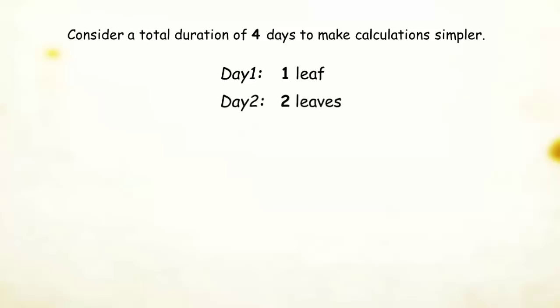Instead of 30 days, just consider a total duration of four days to make the calculation simpler. On day 1, the worm eats one leaf. On day 2, it eats two leaves.